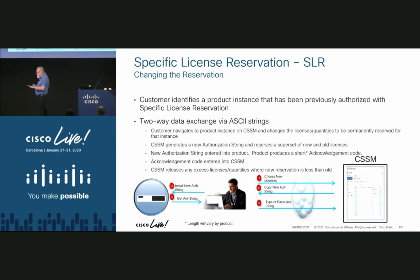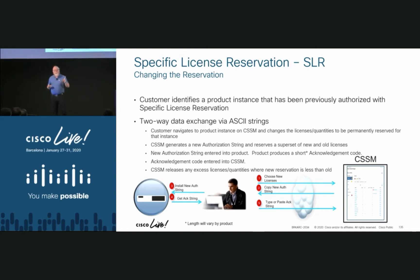Again, you need to ask for license reservation. If you want to enable it for your account, look in the PDF download — there's the email address and the information you need to send to Cisco to get it turned on.